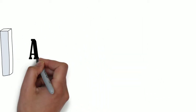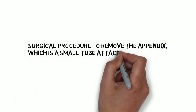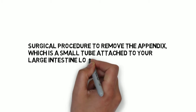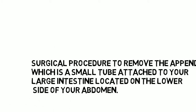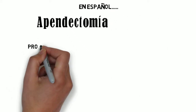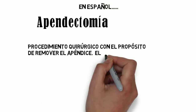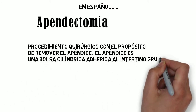First word: appendectomy — surgical procedure to remove the appendix, which is a small tube attached to your large intestine located on the lower right side of your abdomen. In Spanish, the first word, appendectomy: Procedimiento quirúrgico con el propósito de remover el apéndice. El apéndice es una bolsa cilíndrica adherida al intestino grueso ubicada en la parte interior derecha del abdomen.